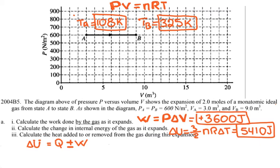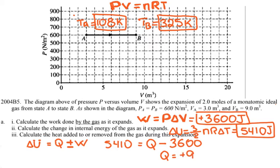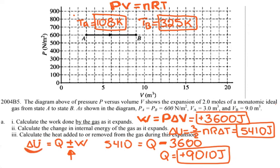The change in internal energy was a positive 5400 joules. Heat Q is what we're looking for. The gas expanded, so work done on the gas is negative, but work done by the gas is positive 3600 joules. Plugging in: Q = ΔU + W_on_gas. Using −3600 for work done on the gas gives Q approximately equal to 9010 joules. The key point: when plugging in work, think about work done on the gas — if the gas expanded, that contribution is negative.